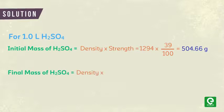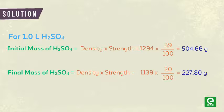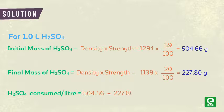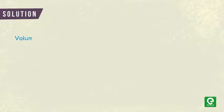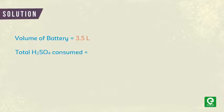The final mass of H₂SO₄ = density × strength = 1139 × 20/100 = 227.80 grams. Hence the sulfuric acid consumed per liter = initial mass − final mass = 276.86 grams. Since the volume of the battery is 3.5 liters, the total amount of sulfuric acid consumed = 3.5 × 276.86 = 969.01 grams.